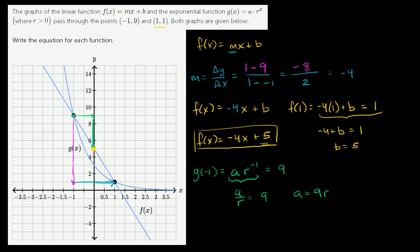Now let's use this other point. This other point, they tell us that g(1), which would be the same thing as a times r to the first power, or just a times r, that that is equal to 1. Or a times r = 1. So how can we use this information right here? a = 9r and ar = 1 to solve for a and r.